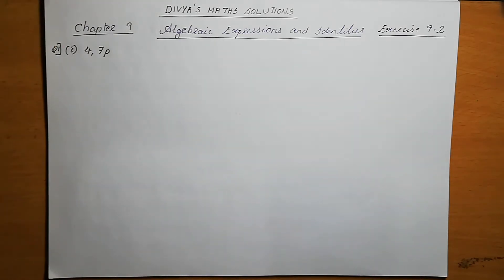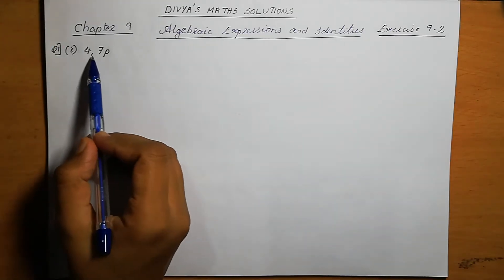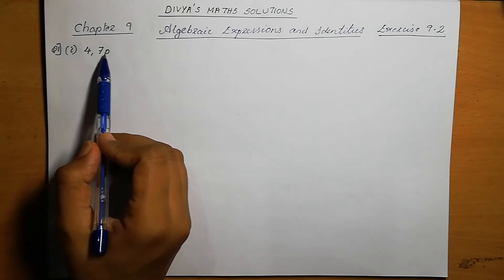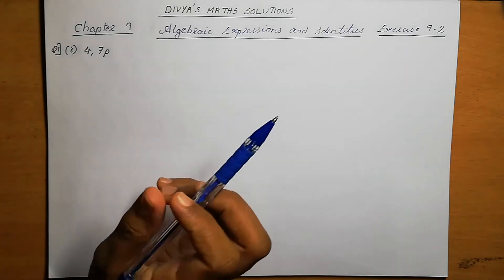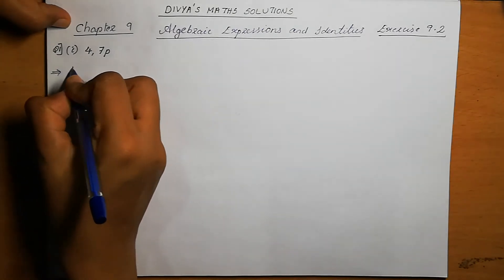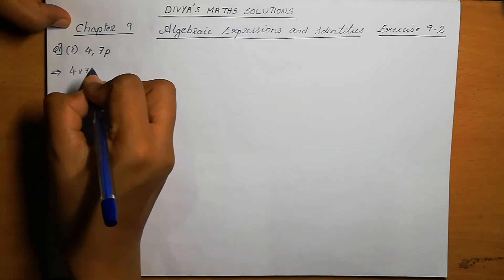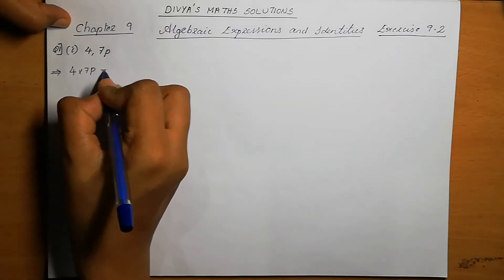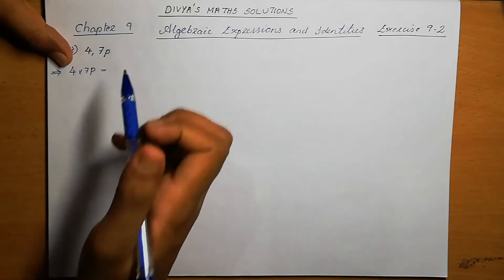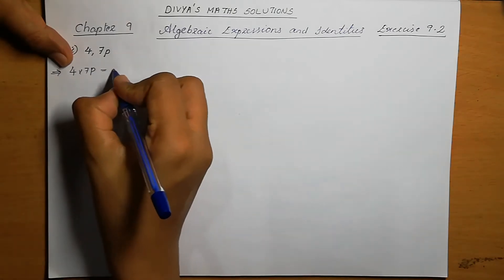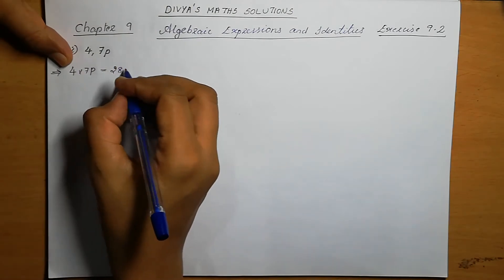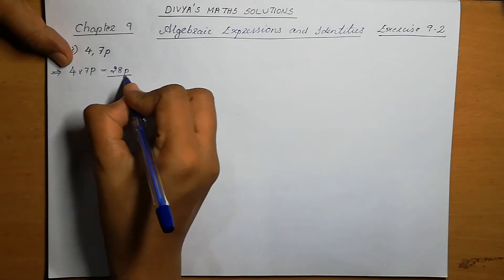Find the product of the following pairs of monomials. The first one is 4 and 7p. We need to find the product, which means we need to multiply. That means 4 into 7p. Multiplying the numbers: 4 into 7 is 28, and then p is there. So the answer is 28p.